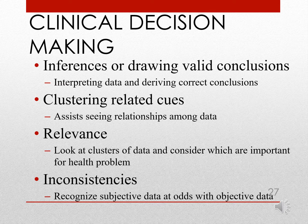When making clinical decisions, we're drawing inferences or valid conclusions based on clustering our cues of data. That's when we're taking in the information — the signs and symptoms — what does a patient tell us and then the signs, what do we actually see? Are these relevant observations that we're putting together? And if they are, are they consistent, or is what the patient telling us different from what we're actually seeing with our own eyes?